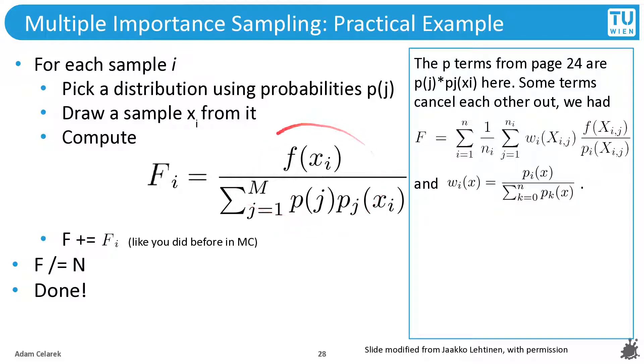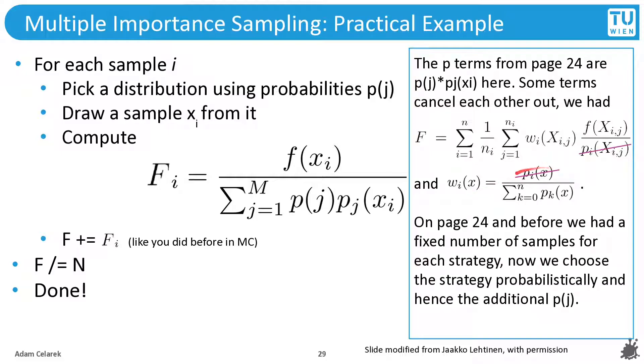Okay, let's have a closer look at this one. Before, we said this is supposed to be our f. We have the f over the probability and we multiply with the weight. This comes from the balance heuristic. And we can see that those are reduced. And this is what I said before.